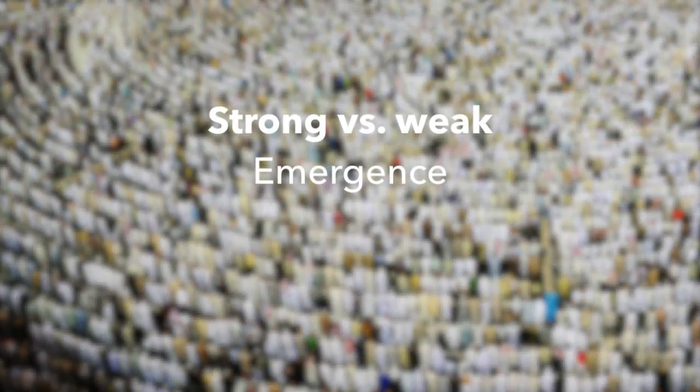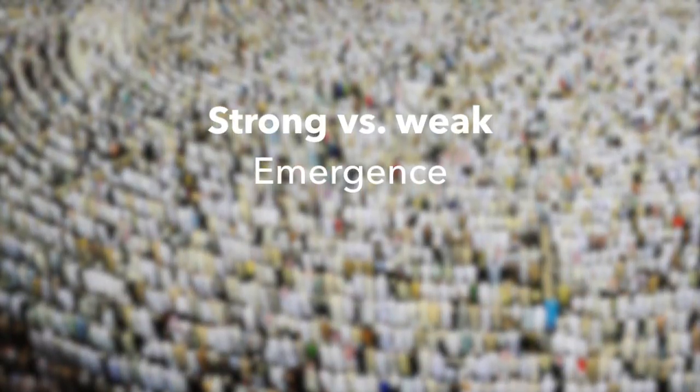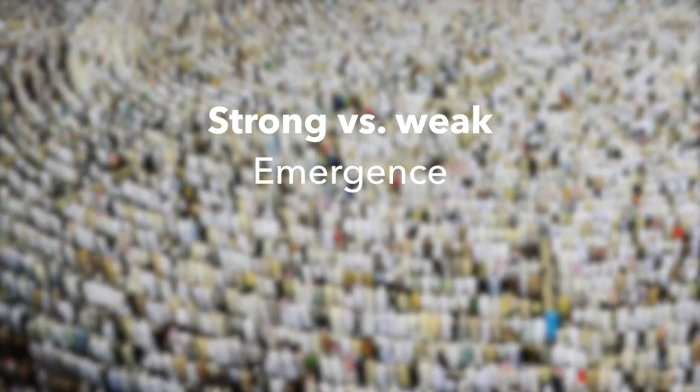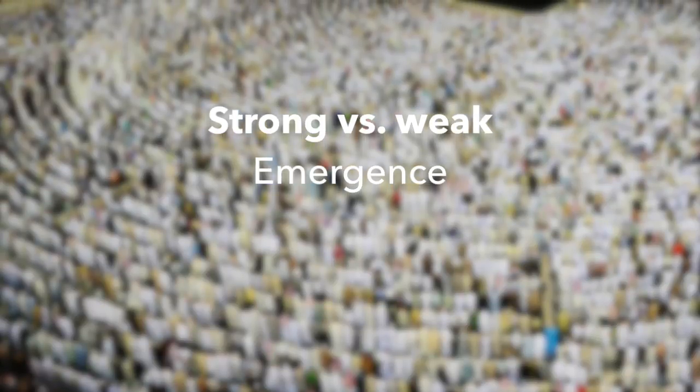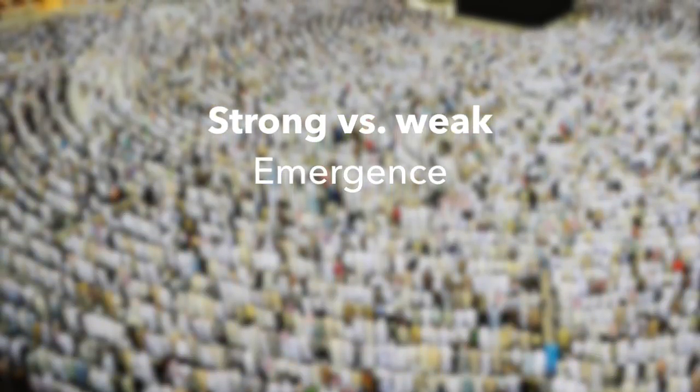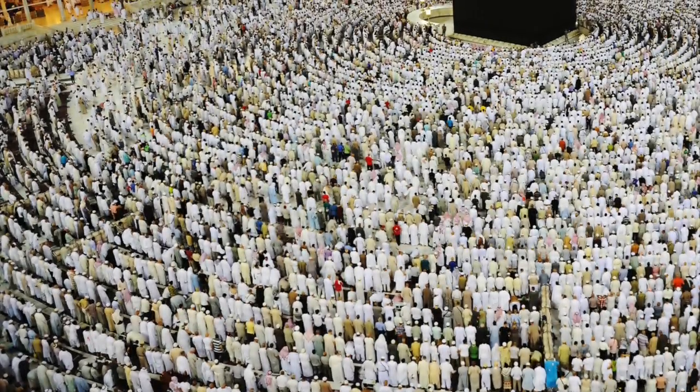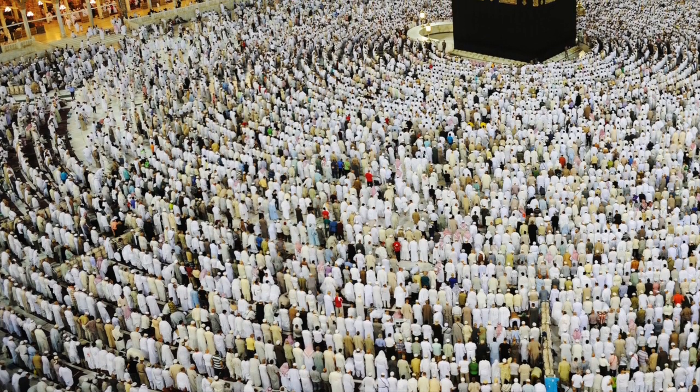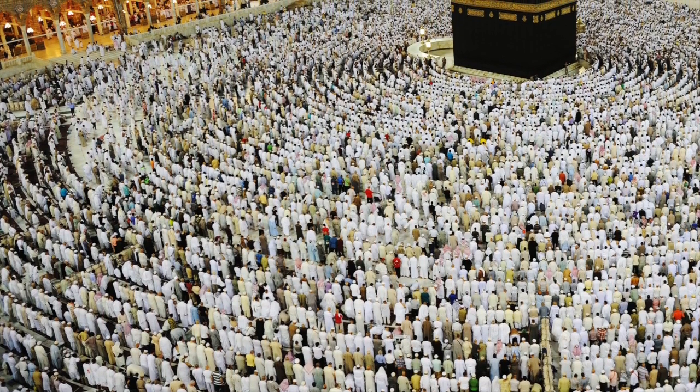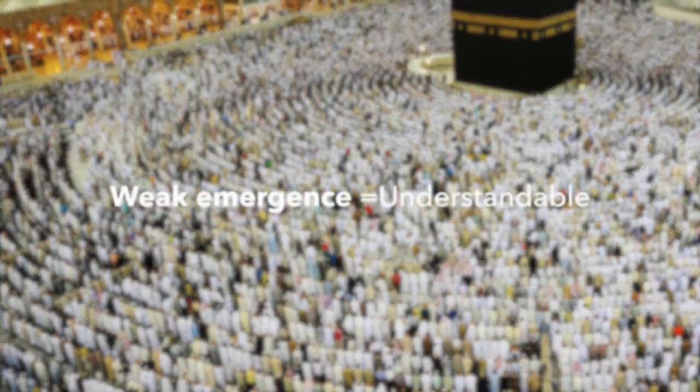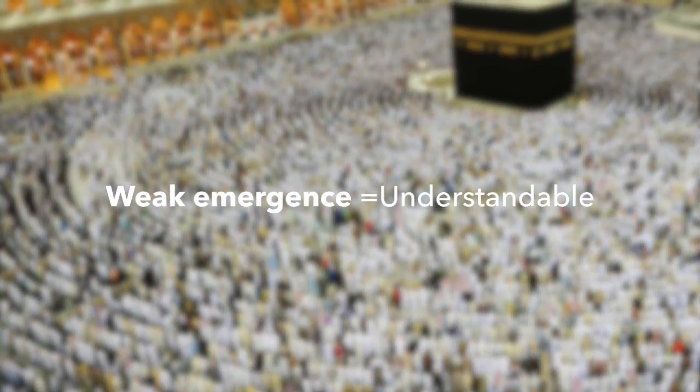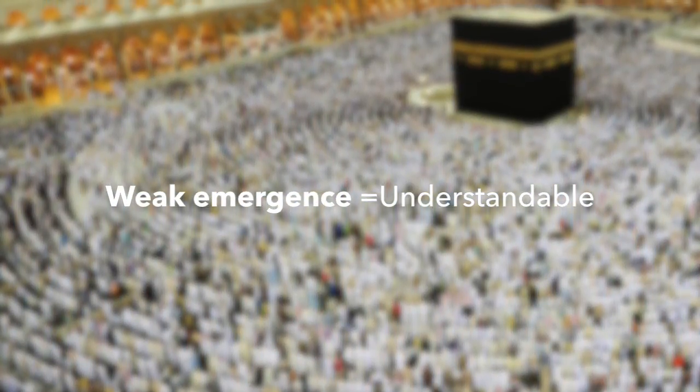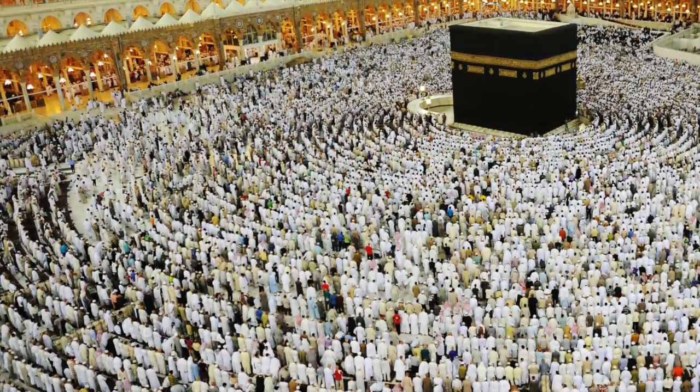This illustration helps to bring us to another important theme within emergence, that is the distinction between what is called strong and weak emergence. Weak emergence describes how the emergent phenomena can be traced back to the individual elements, meaning we can predict and observe higher level emergent phenomena just by looking at individual components.